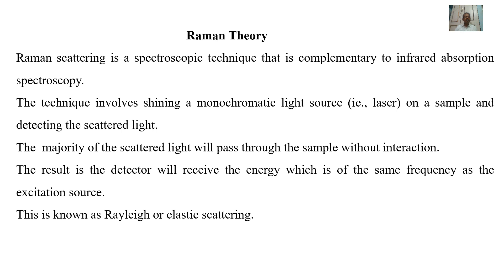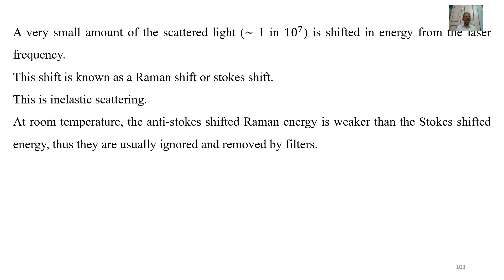Raman scattering is a spectroscopy technique that is complementary to infrared absorption spectroscopy. The technique involves shining a monochromatic light source — that is, a laser — on a sample and detecting the scattered light. The majority of scattered light will pass through the sample without interaction, and the detector will receive energy of the same frequency as the excitation source. This is known as Rayleigh elastic scattering. A very small amount of the scattered light, around 1 in 10 to the power 7, is shifted in energy from the laser frequency. This shift is known as Raman shift or Stokes shift, and is inelastic scattering.